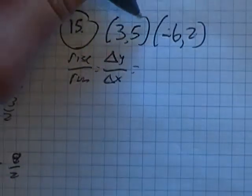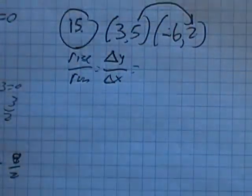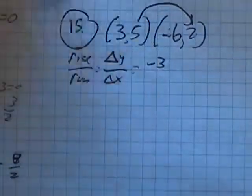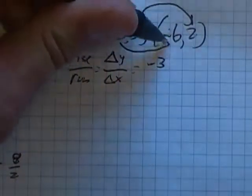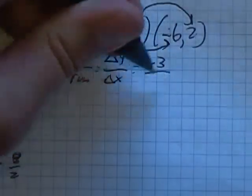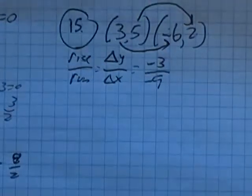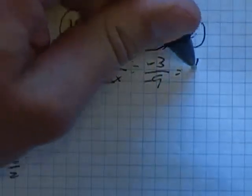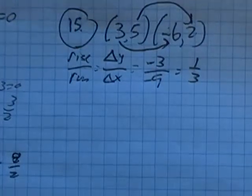So my change in y, if I go from 5 all the way down to 2, I've gone negative 3. And if I go 3 all the way down to negative 6, 3 hit 0, negative 6 more. I've gone down 9, so negative 9. Negative 3 divided by 9 is positive 1 third, so I know my slope's 1 third.